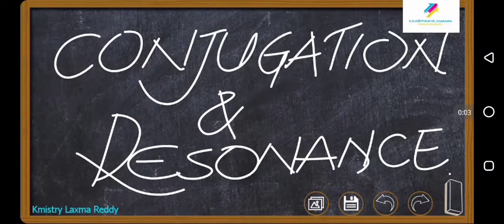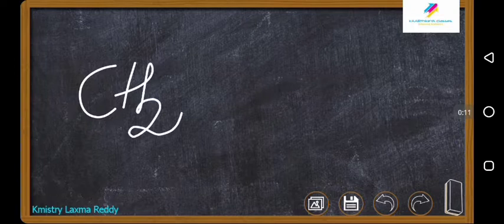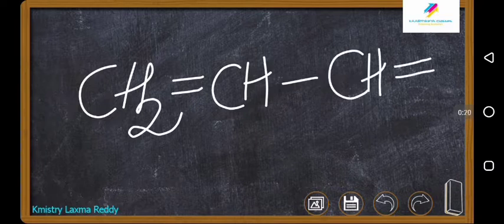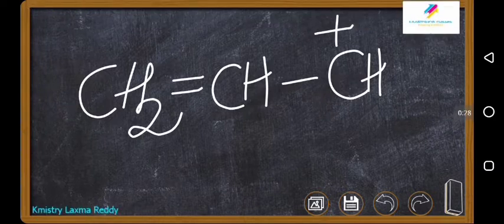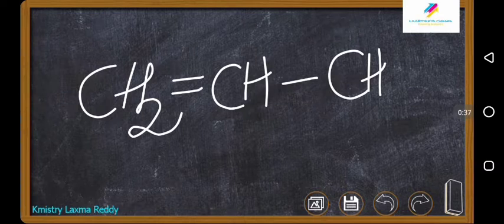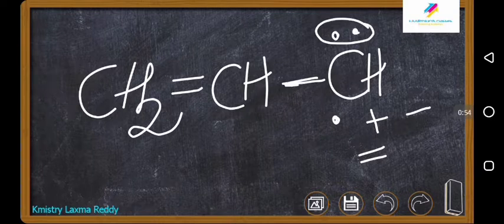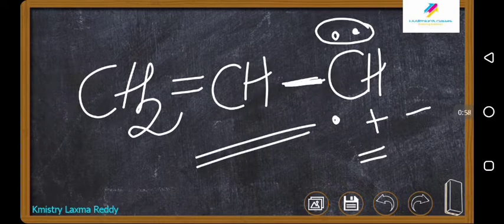Today we will discuss conjugation and resonance. Conjugation means when an unsaturated compound is present and it is separated by a single bond with another unsaturated one. You can also have a plus charge, minus charge, one electron (odd electron), or two electrons (lone pair). If any of these are separated from an unsaturated system by a single bond, such compounds are called conjugated compounds, and this property is called conjugation.